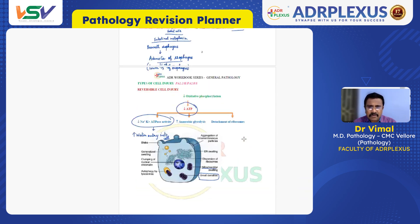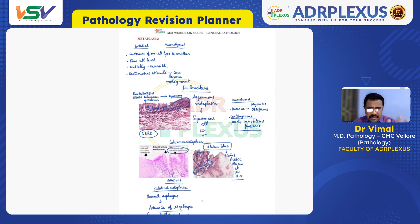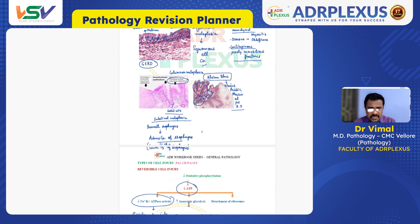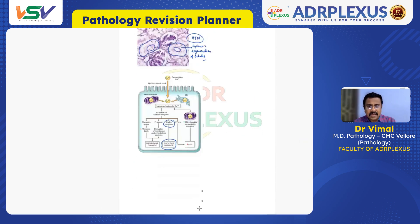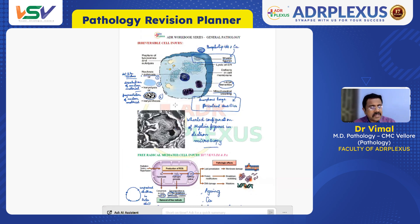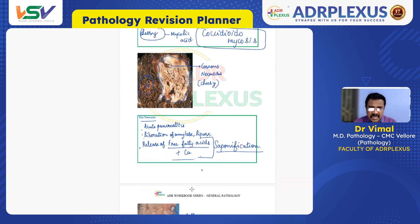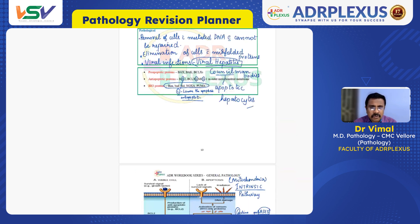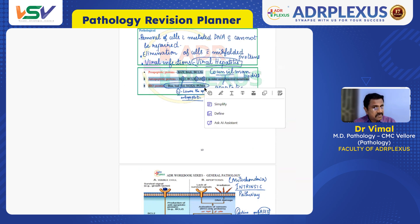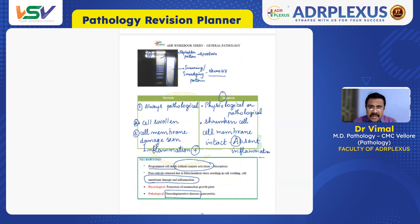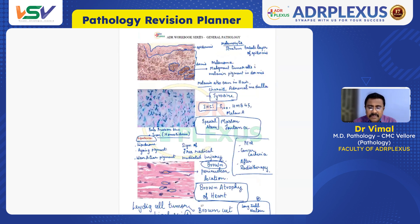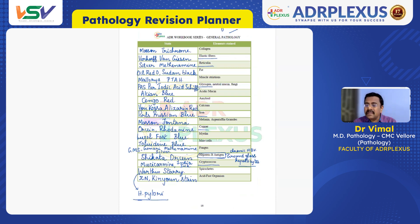In the second revision, focus mainly on images — just quickly go through images once. For example, pyknosis, karyolysis, karyorrhexis — go through these in the second revision as well. For necrosis, review the keywords and highlighter marks. For apoptosis, go through pro-apoptotic genes and related content even in the second revision, since the first revision would have already covered it. By the end of the second revision, make sure you have covered all these points.